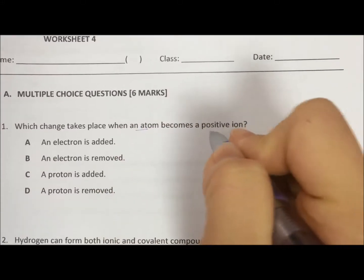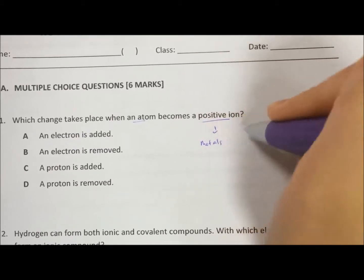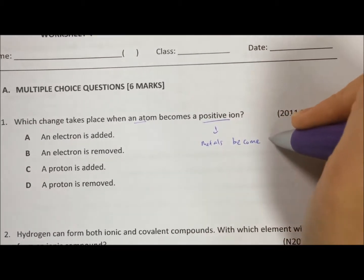Worksheet 4, question 1. Which change takes place when an atom becomes a positive ion? You must remember, positive ions are metals.